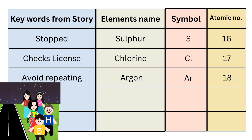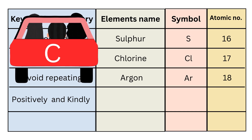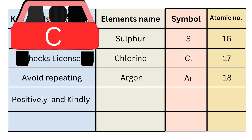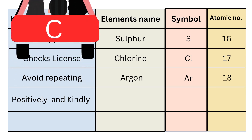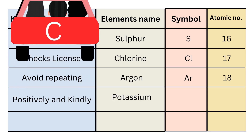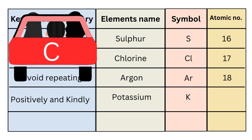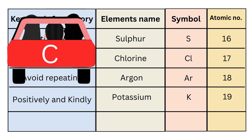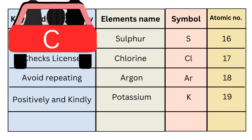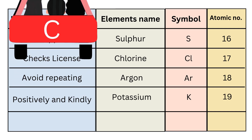Though they missed their night movie show, everyone took that lesson positively and kindly. So your next key words are 'positively and kindly', from which you can remember the nineteenth element name, that is Potassium. Symbol is K, and atomic number is 19. Here the symbol is different from the element name, so remember the word 'kindly' for the symbol K.